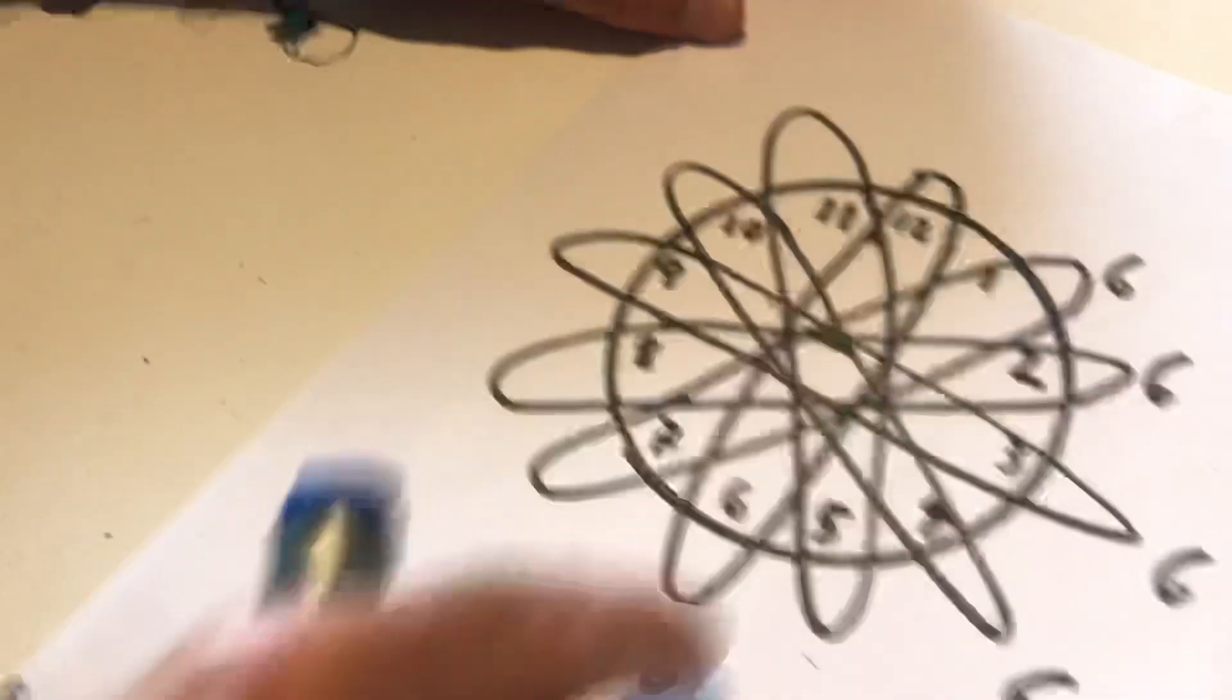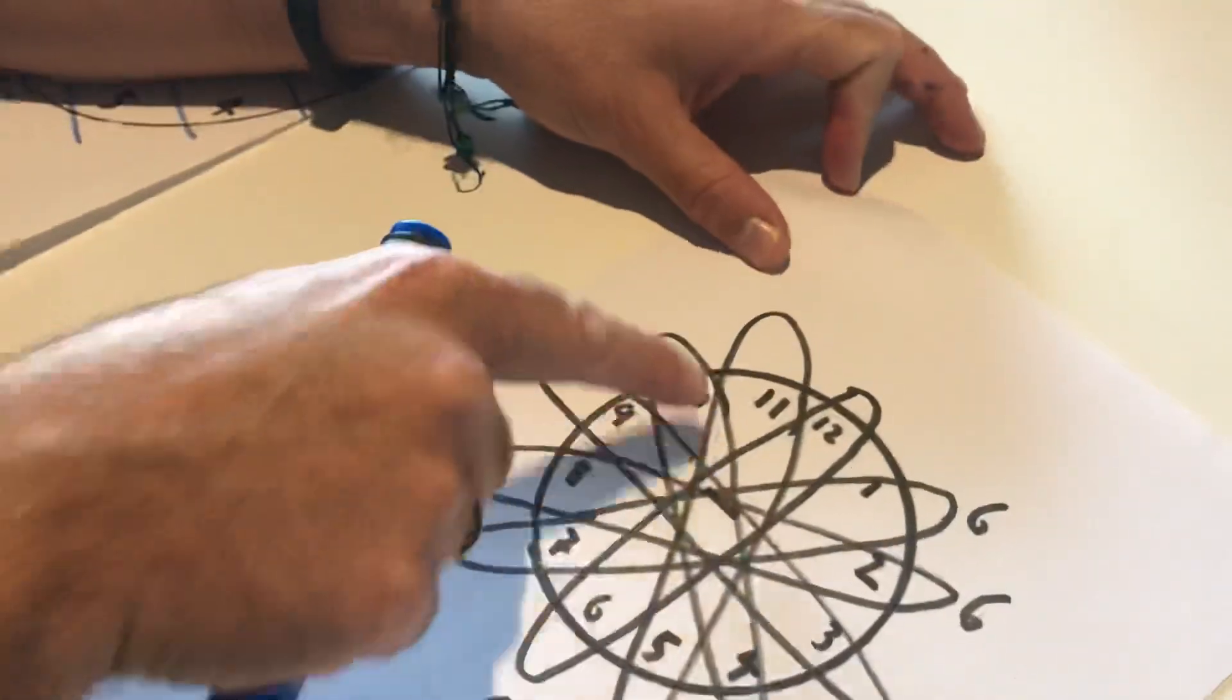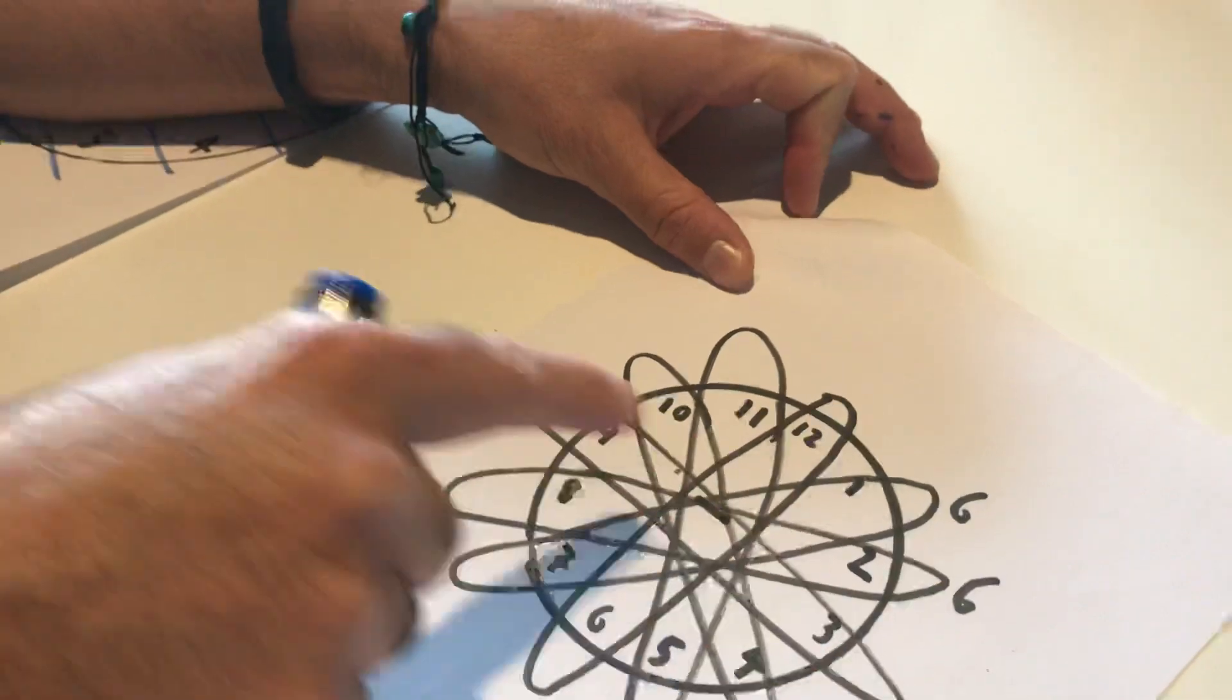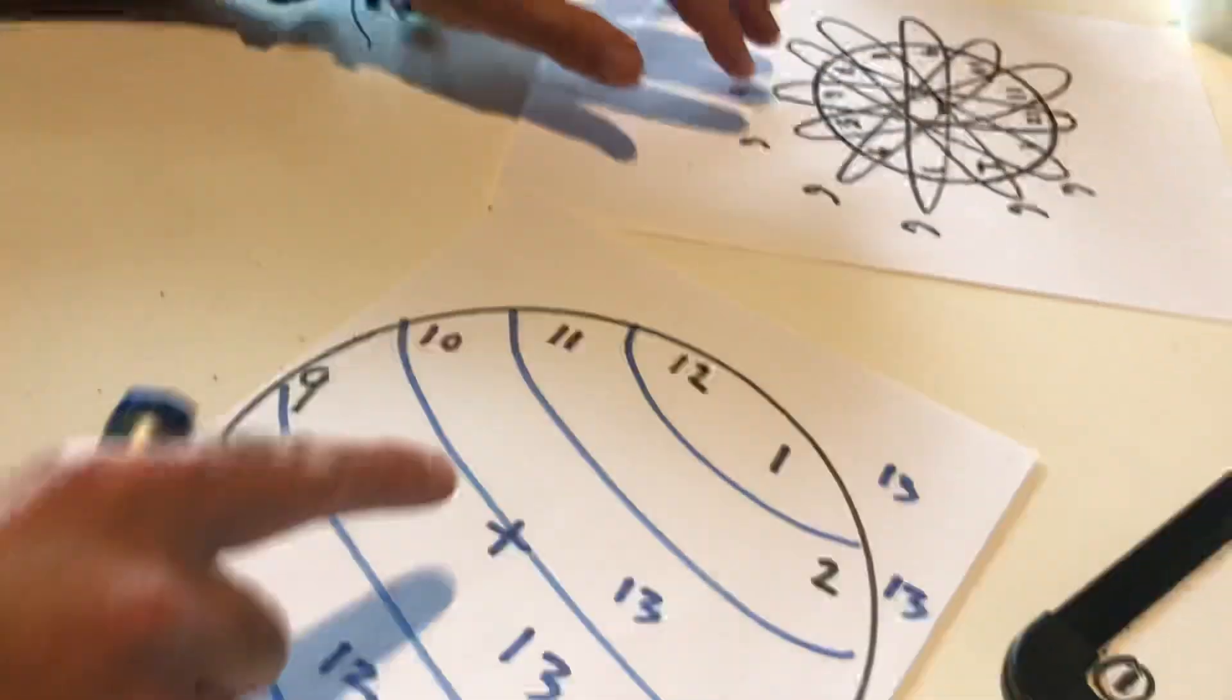The second one was this one. Subtracting. Making 6s. So, 12 minus 6. 11 minus 5. 10 minus 4. 9 minus 3. 8 minus 2. 7 minus 1.